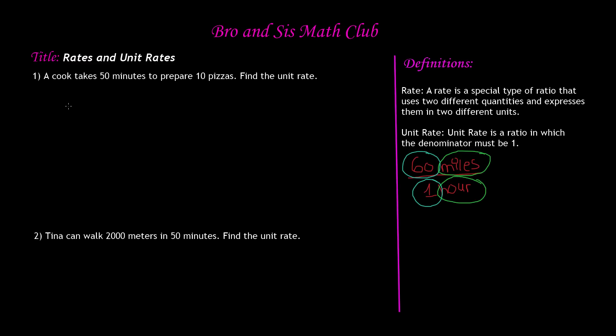That just means that we know from our previous videos that a ratio can be expressed as a fraction. So first, what we have to do is write our rate as a fraction. Because after all, it is a ratio, right? So here it says, a cook takes 50 minutes to prepare 10 pizzas. So we can write this as 50 over 10.